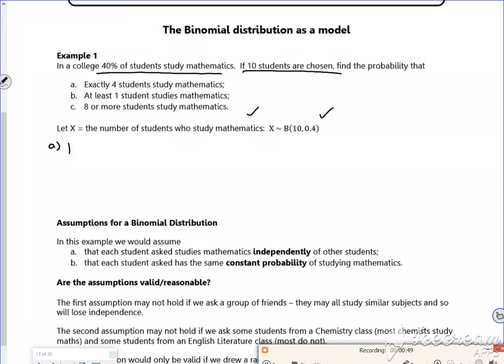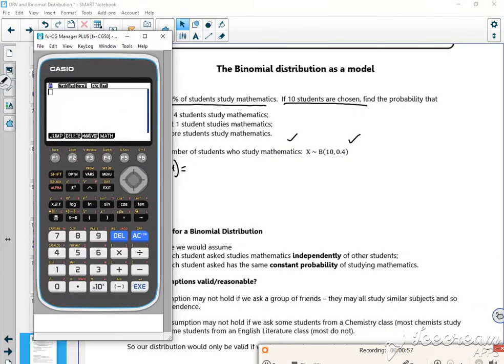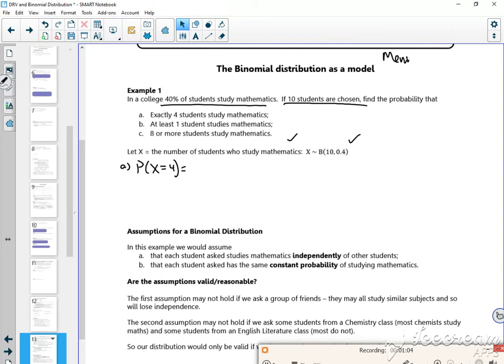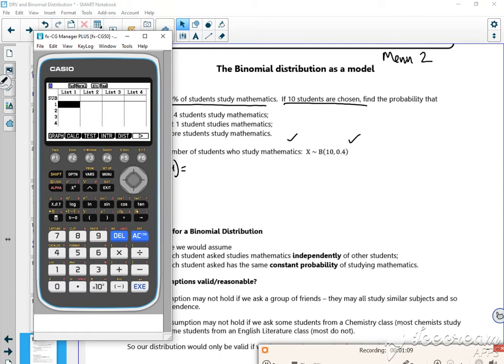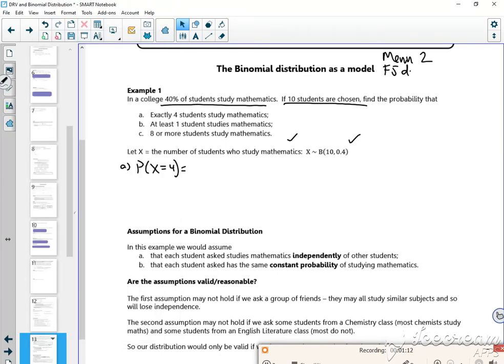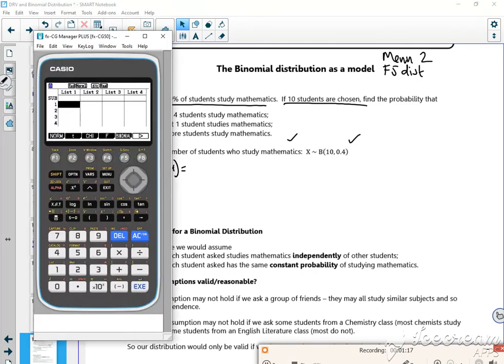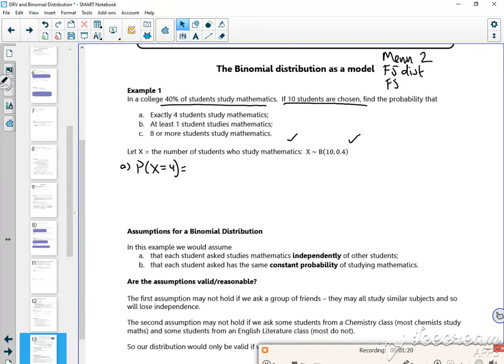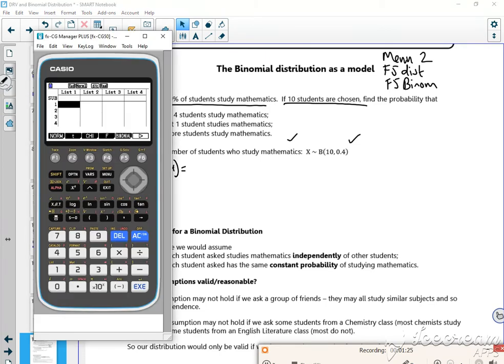So part a, the probability that x is equal to 4. Right, so let me get the calculator up then. Okay, so if I do menu and 2, so let's write menu 2 here. It's disappeared my calculator, awesome. And then f5 for distribution, f5 for distribution, and f5 for binomial, f5 for binomial.